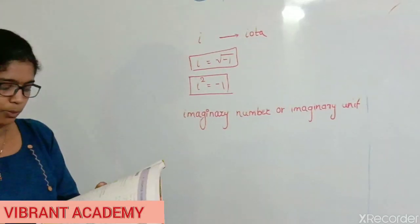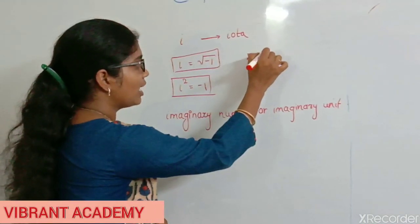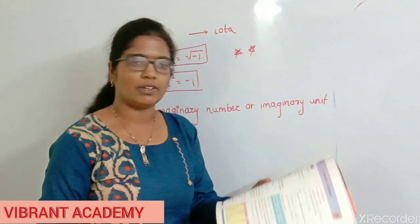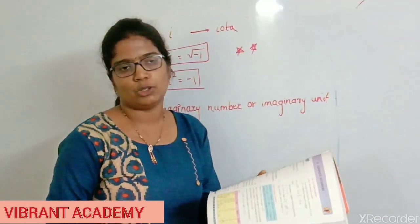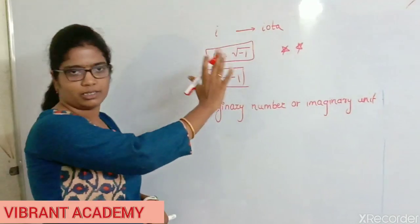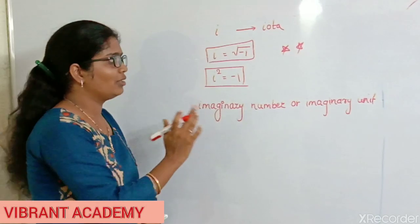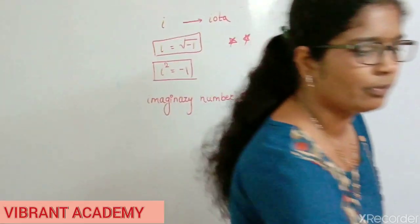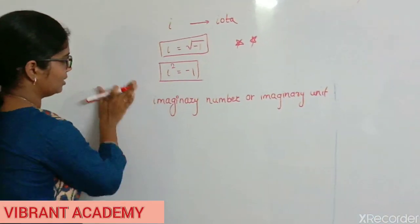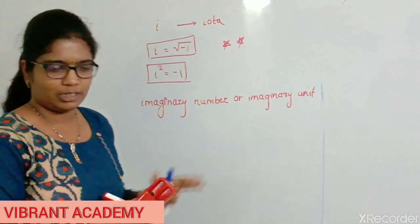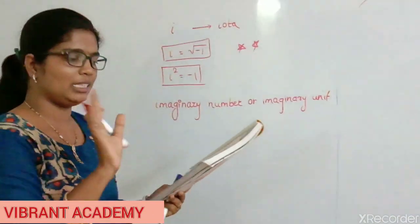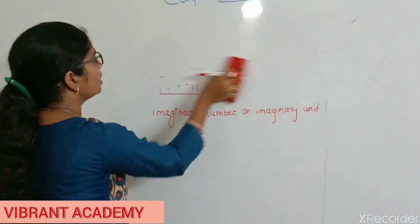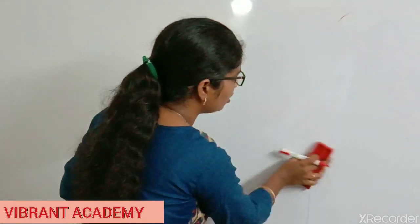Here, i is called the imaginary number or imaginary unit. The value of i — note it carefully — i equals under root minus 1, or i squared equals minus 1. The Swiss mathematician Leonhard Euler first introduced this symbol: i equals root minus 1, or equivalently i squared equals minus 1, simply called iota.